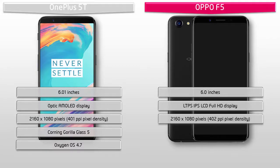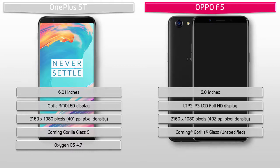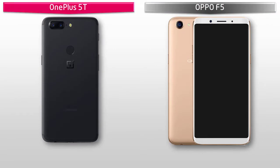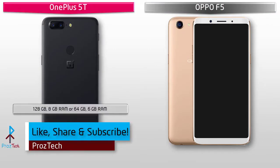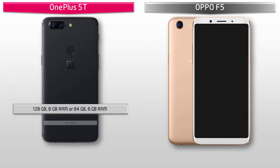Talking about internal memory, the OnePlus 5T comes in two variants: 64 GB and 128 GB of onboard storage with 6 or 8 GB RAM, but with no external microSD card support.